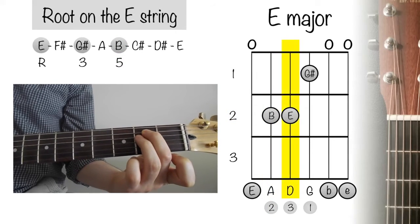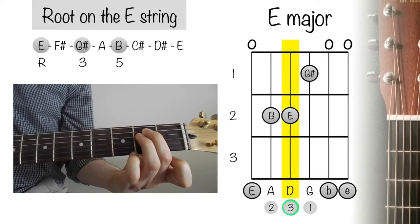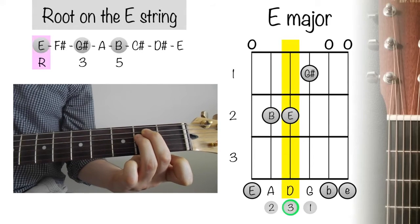Directly under that, this time on the D string, we are going to double the root by using our ring finger to play the note E on the second fret.